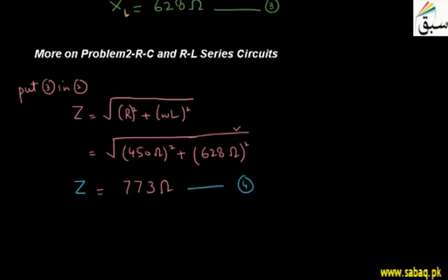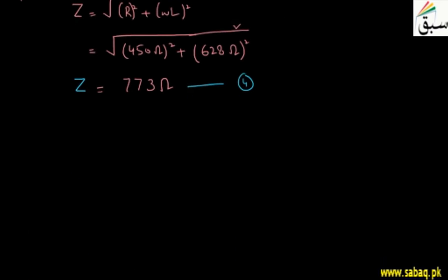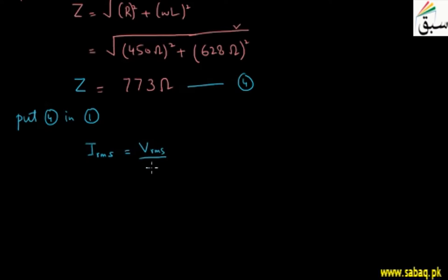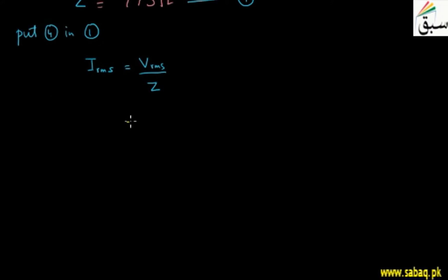Now let's put equation number 4 into equation number 1. Equation number 1 is: the root mean square value of current equals the root mean square value of voltage divided by Z. So putting in the values, we have 100 volts divided by 773 ohms, giving us a value of 0.129 amperes.